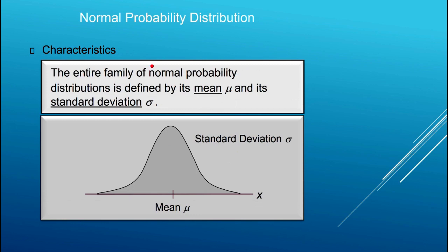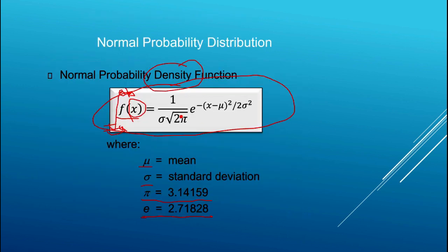The entire family of normal probability distributions is defined by just two parameters: the mean and the standard deviation. The mean is right in the middle, and the standard deviation is typically written in the upper right corner of the graph. If you look at the formula, the only thing that distinguishes one normal probability density function from another is the standard deviation and the mean — those are the only two parameters that determine a normal probability density function.